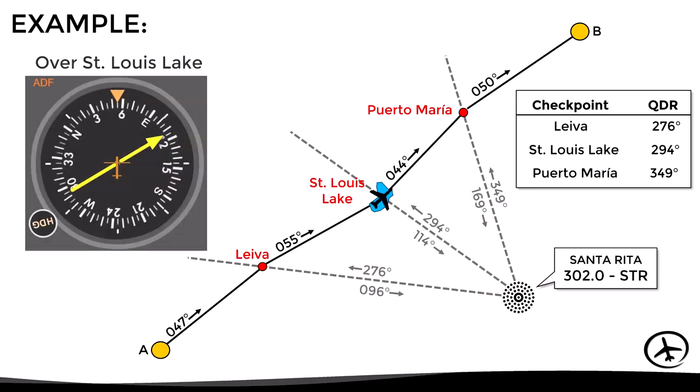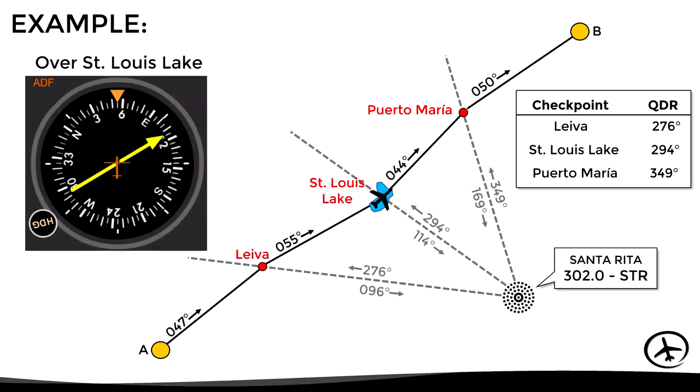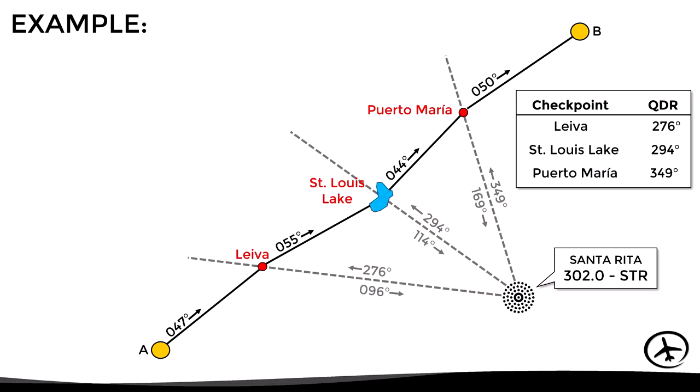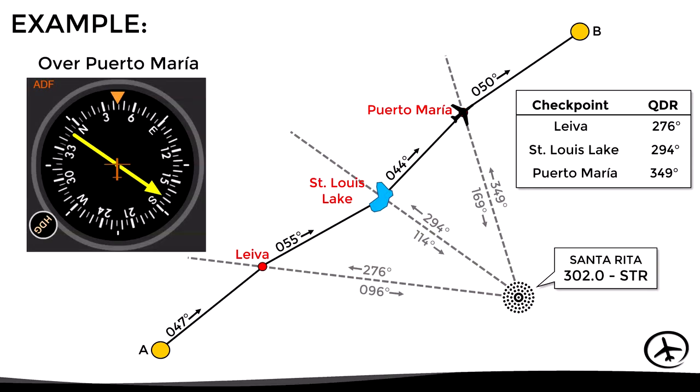In the same way, when the ADF shows a QDR of 294, the pilot can start looking outside for the St. Louis lake. And finally, when the aircraft is flying over Porta Maria, the ADF will show a QDR of approximately 349. In this way, even though VFR navigation is mainly conducted by dead reckoning and visual references, NAVAIDs can be used as a secondary navigation source to cross-check the information, especially when flying over unfamiliar areas.